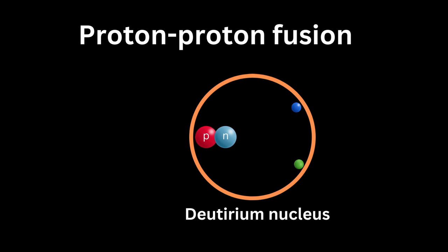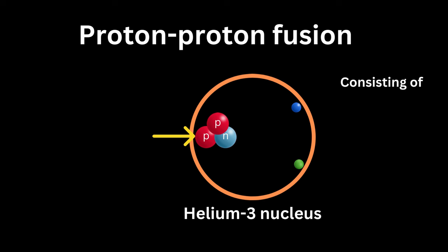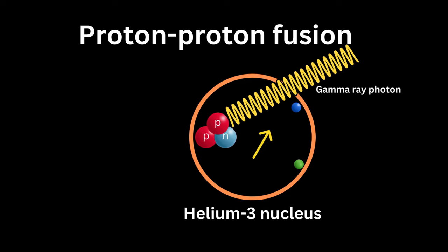Two: Deuterium capture. In the second step, a second proton is added to the deuterium nucleus created in the first step to create a helium-3 nucleus—two protons and one neutron. A gamma ray photon is released by this process.